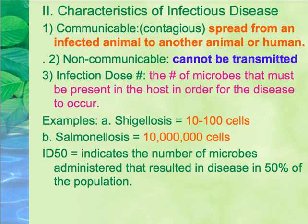If you see the term ID50 in a textbook or journal article, that means the number of microbes administered that resulted in disease in 50% of the population. In testing subjects, researchers determined that number based on the infection rate of 50% of the population — kind of scary to think about, but studies have been done that way.